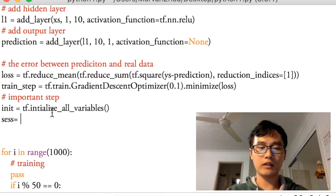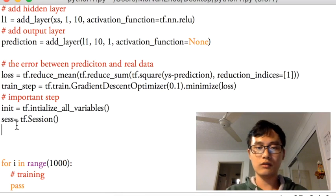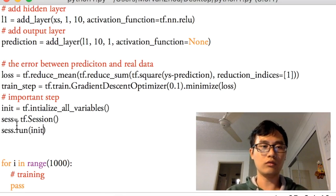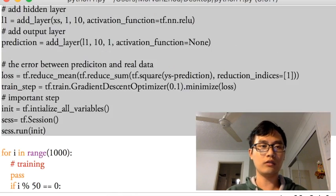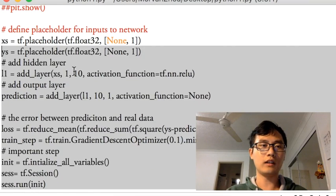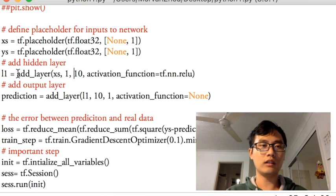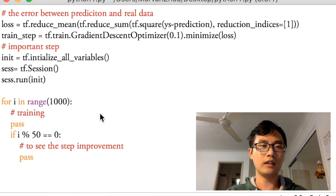And then define a session, tf.Session, and use the session to run the initial operation. So that is session.run initialize. All good. This is the whole structure of this neural network. We have defined two layers, one is the hidden layer, one is the output layer.